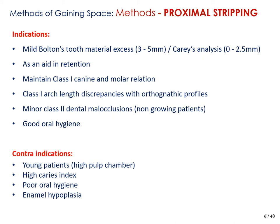Looking at the indications for performing proximal stripping: if there is mild Bolton's tooth material excess of around three to five millimeters, or when caries analysis shows less than 2.5 millimeters of space is needed, you can use this technique. It can also be used as an aid in retention, as the broadened contact areas allow teeth to occupy a more stable position and help maintain good oral hygiene. It's also indicated to maintain Class I canine and molar relationships, for Class I arch-length discrepancies with acceptable profiles, and for minor Class II dental malocclusions in non-growing patients.